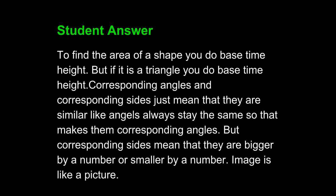Here is a student answer to this prompt. To find the area of a shape, you do base times height. Corresponding angles and corresponding sides just mean that they are similar — angles always stay the same, so that makes them corresponding angles. But corresponding sides mean that they are bigger or smaller by a number. Image is like a picture. Obviously, this writing is severely flawed, but it can be fixed.